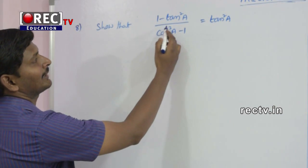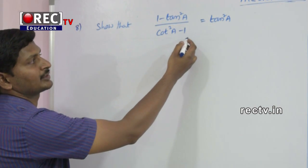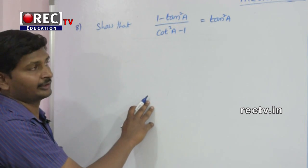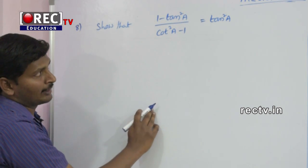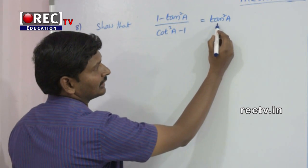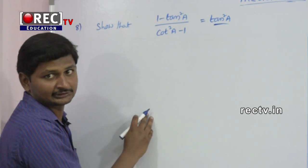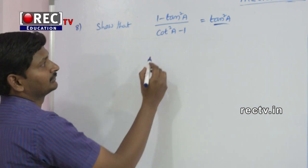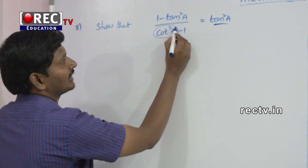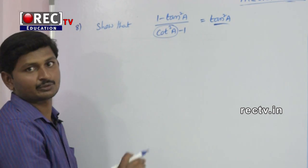Show that (1 - tan²a) / (cot²a - 1) = tan²a. We have to observe that the RHS is in tan²a, which means we have to convert cot²a in terms of tan²a.